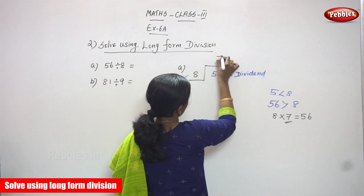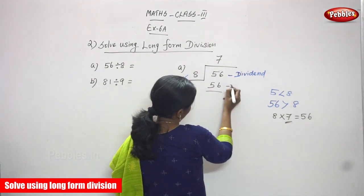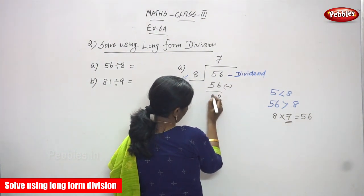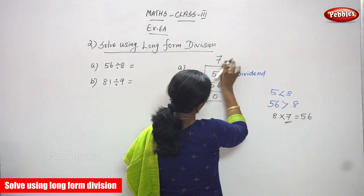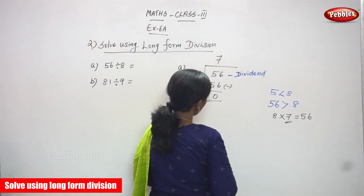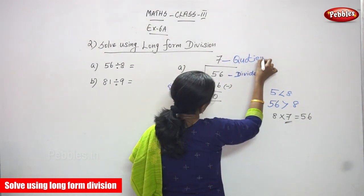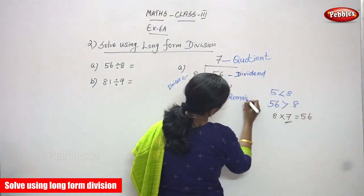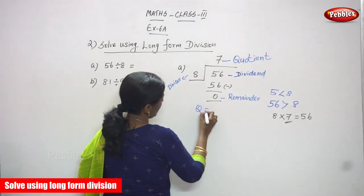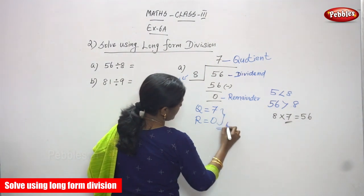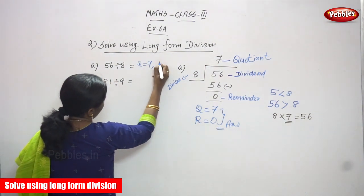So 8 sevens are 56, which means 7 is the quotient. You must write the quotient on the top, then write 56 in the dividend place. Now, 6 minus 6 is 0, and 5 minus 5 is 0. So the remainder is 0. The left-over number is always the remainder, and the top number is the quotient. The answer: Q equals 7 and R equals 0.